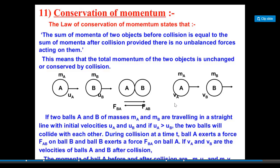In the live class we will do the derivation for conservation of momentum and prove that mA·uA + mB·uB = mA·vA + mB·vB. That is, the total momentum of the two bodies before collision must equal the total momentum of the bodies after collision.